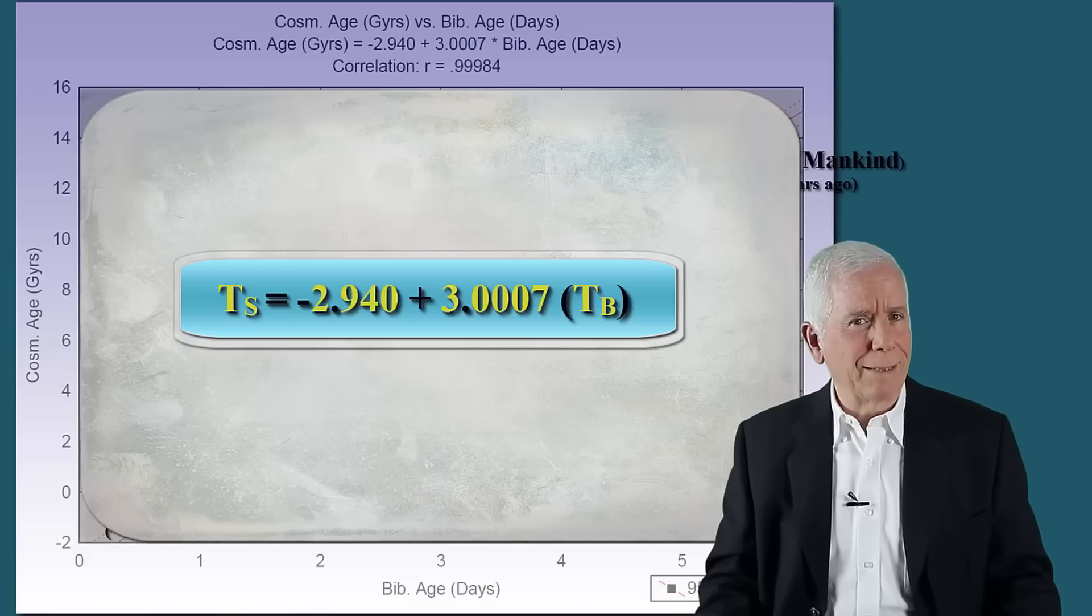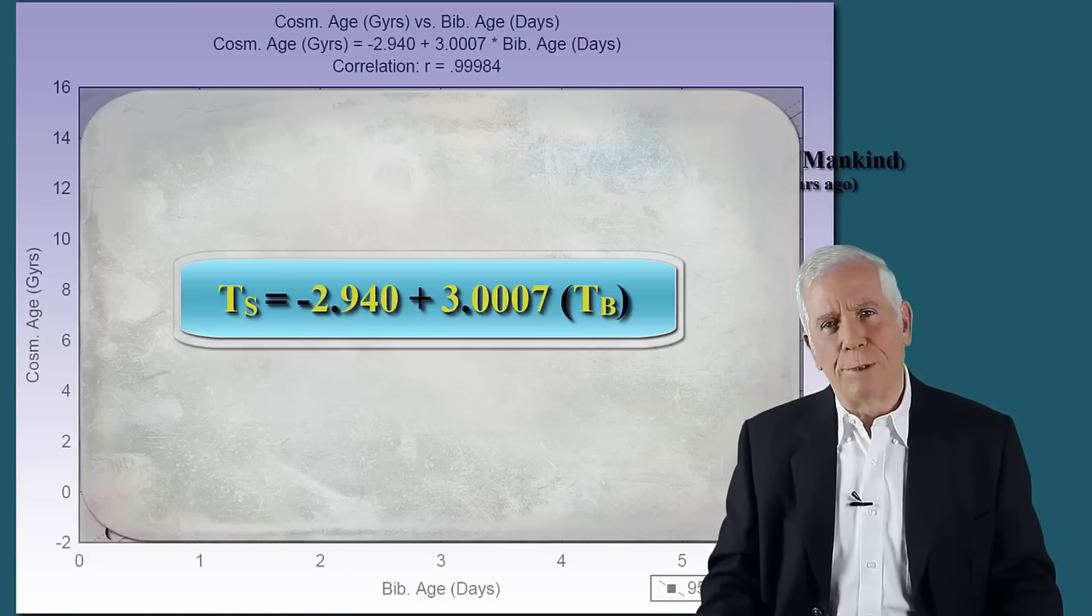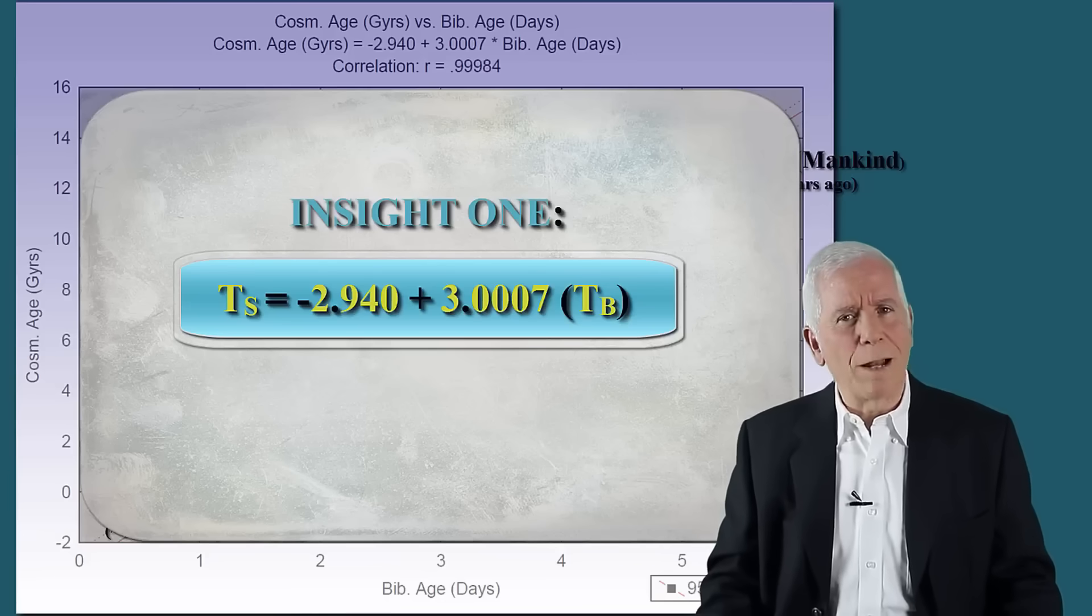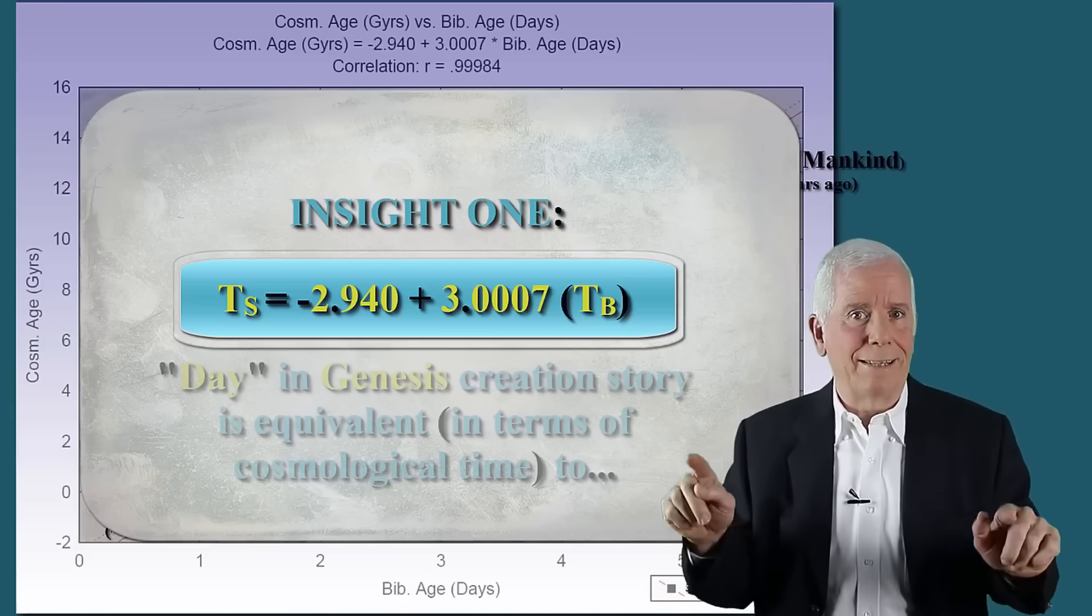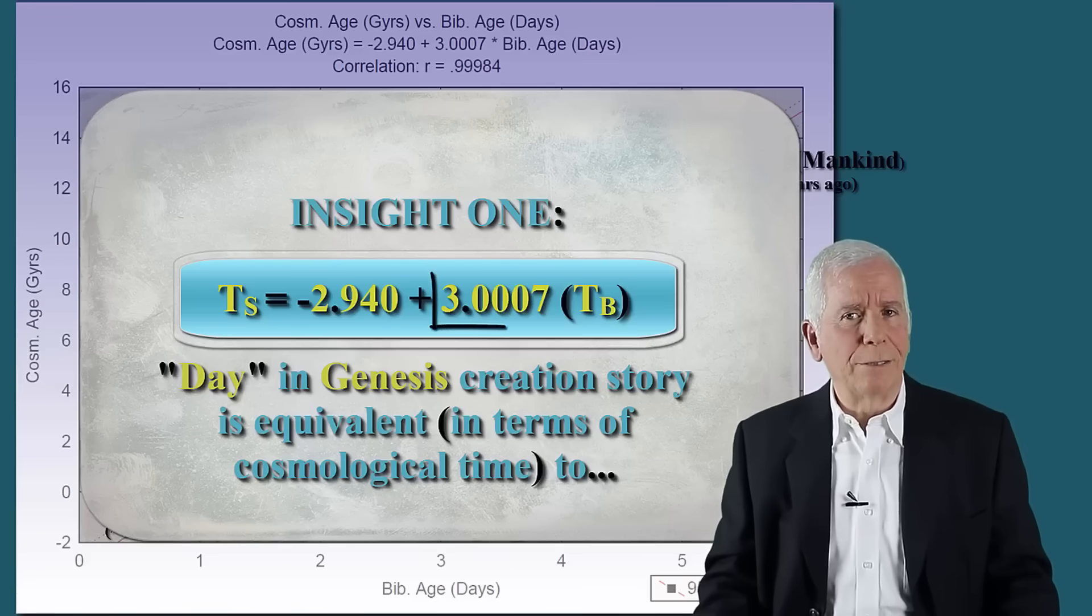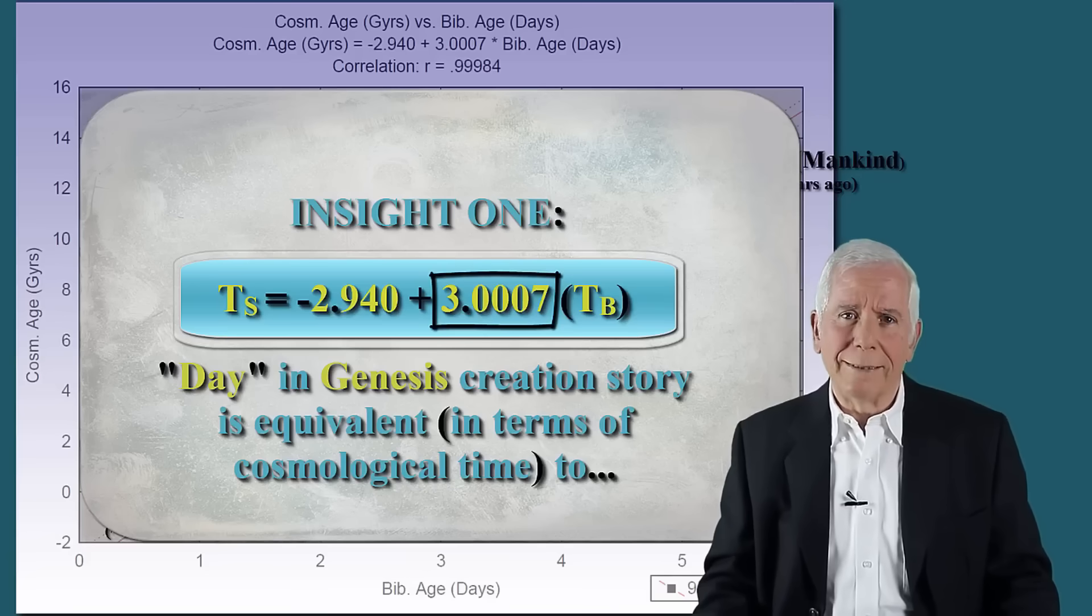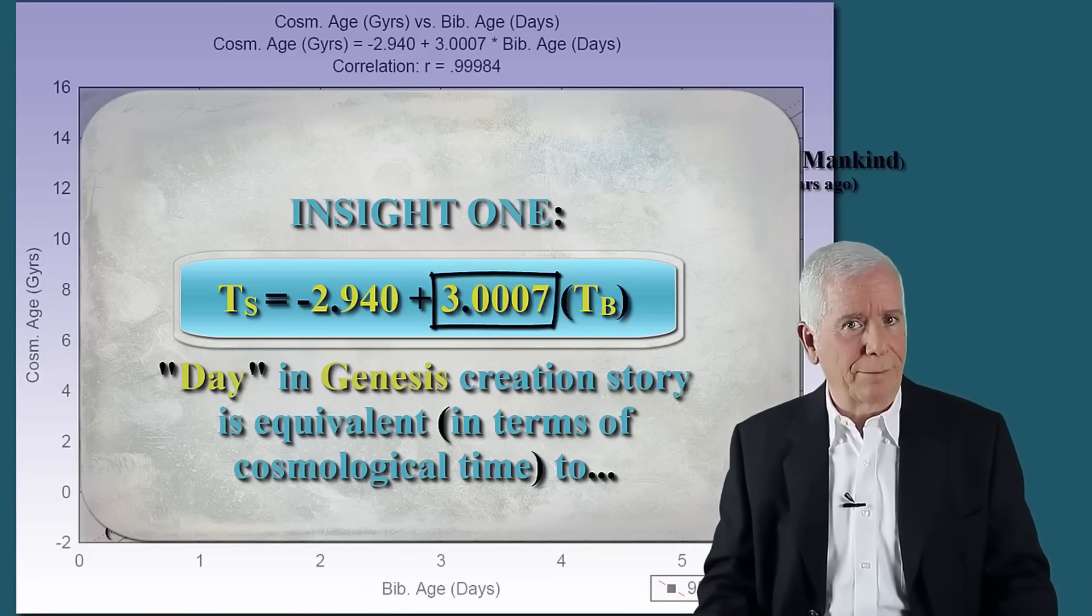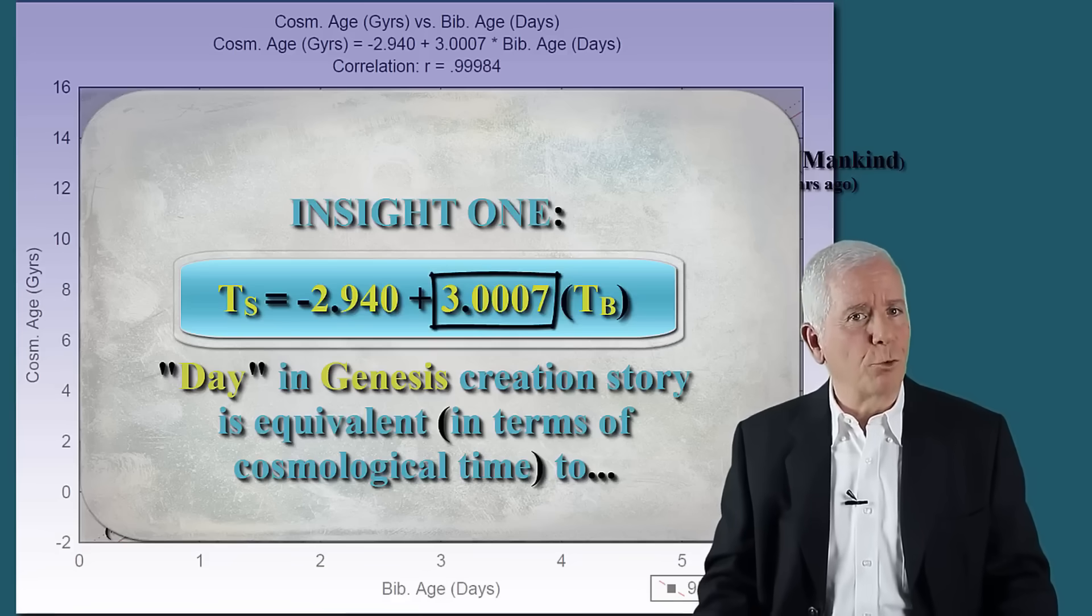The equation presented is stunning in three respects, which bring forth three stunning insights. Insight one. From the equation, one may deduce that day in Genesis creation story is equivalent, in terms of cosmological time, to 3.0007 billion years. We emphasize, this value has been obtained automatically from the computer, from computerized statistical analysis of the data. There was no intervention of human hand here.